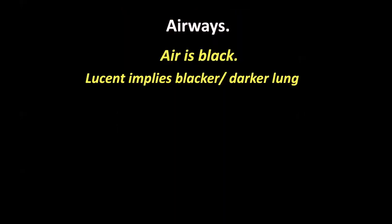Air is black, and lucent implies a darker lung. Once you've looked at the technical factors and cardiothoracic ratio, the next thing to look at is what you expect to be black. We're all trained to look at an X-ray and immediately go 'oh, it's white there — there must be consolidation, a pleural effusion, a mass.' We tend not to look at the part that is most obvious, which is the air — the black parts.